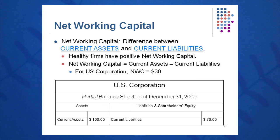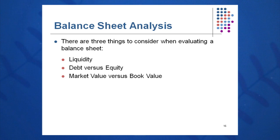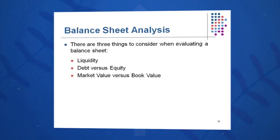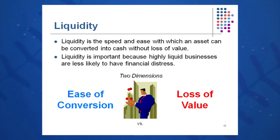Net working capital is a critical equation — the difference between current assets and current liabilities. Obviously, I want more current assets than current liabilities to pay my bills promptly. When looking at a balance sheet, I like to put on three sets of goggles: first, liquidity goggles; then debt versus equity goggles; and then market versus book goggles. Liquidity is the speed and ease with which I can turn an asset into cash without a loss of value.